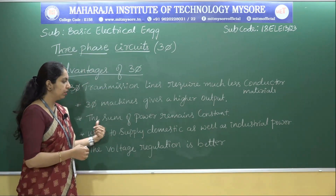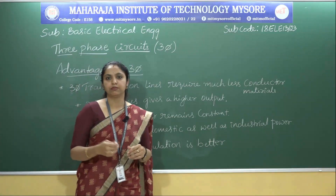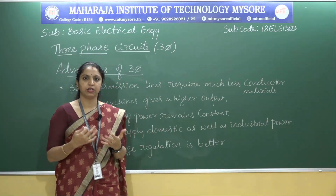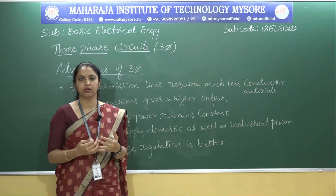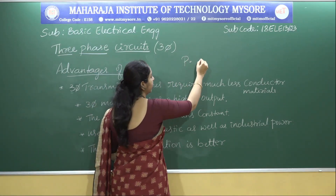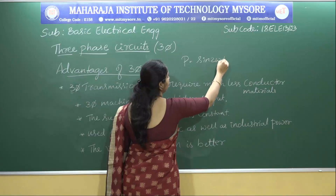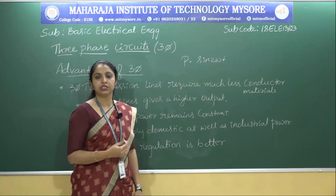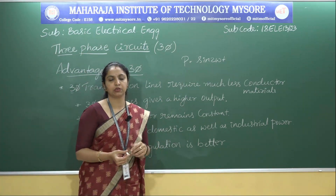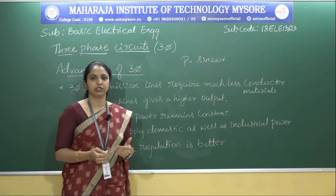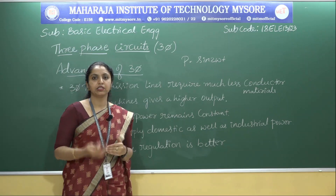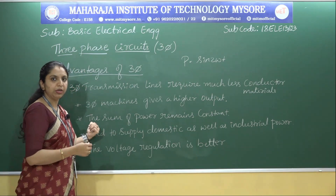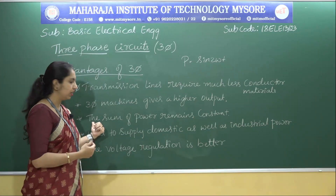Third, the sum of the power remains constant. In single phase power, the power pulsates at twice the line frequency — as we derived in single phase circuits, the power expression has a sine 2ωt term, so instantaneous power is in terms of 2ω. But in three phase, the sum of the power remains constant. This is a main advantage of three phase circuits.